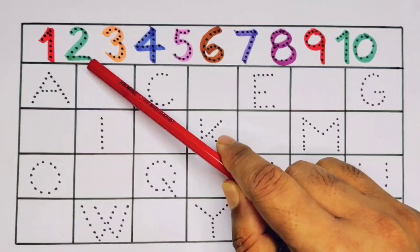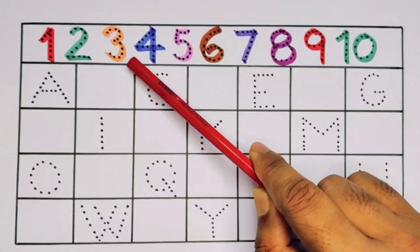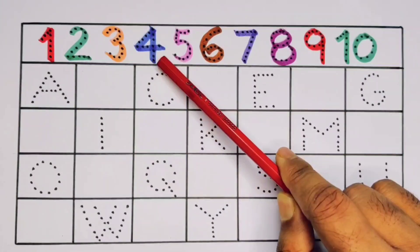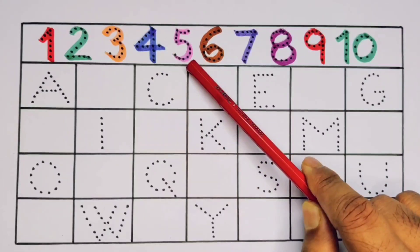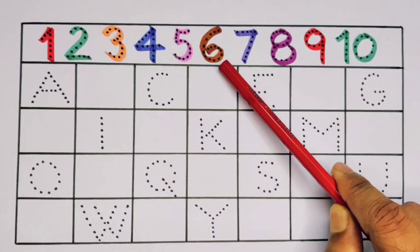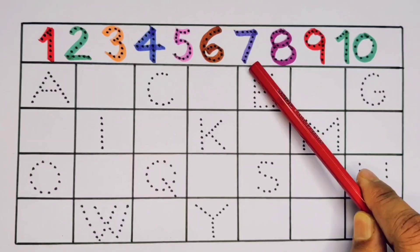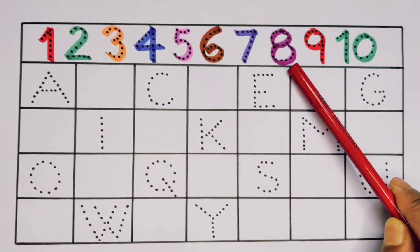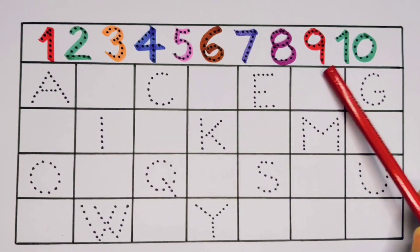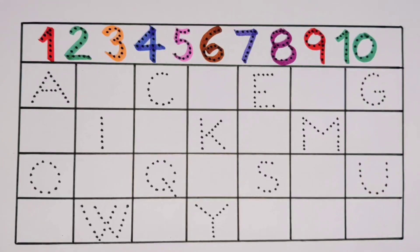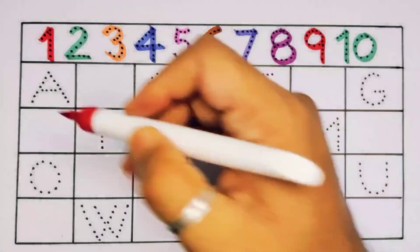Now you learned one, two, three, four, five, six, seven, eight, nine, one zero, ten. Now let's learn the alphabet A to Z.